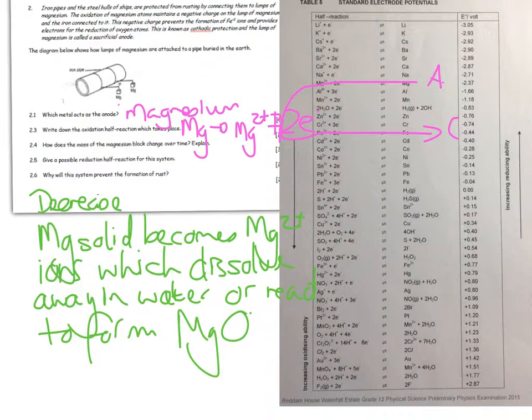Give a possible reduction half reaction for the system. We're going to write that iron reaction: Fe²⁺ plus 2 electrons becomes Fe. In other words, every time a loose Fe²⁺ comes off, the spare electrons from magnesium will make sure they stay iron all the time.